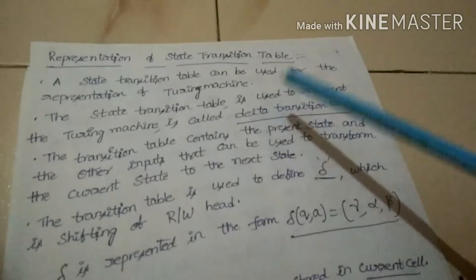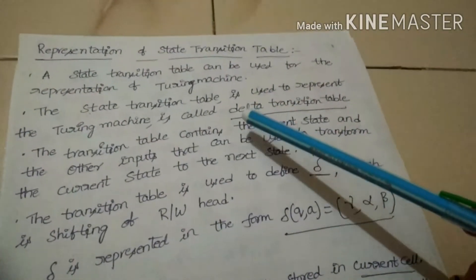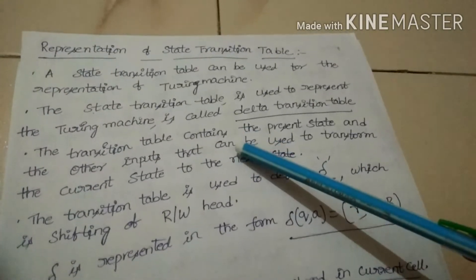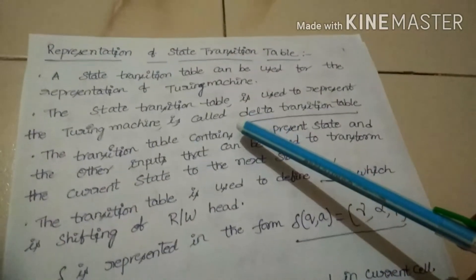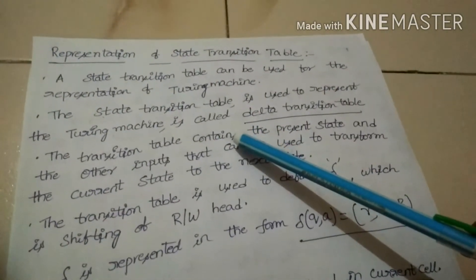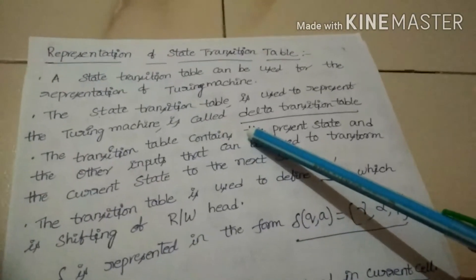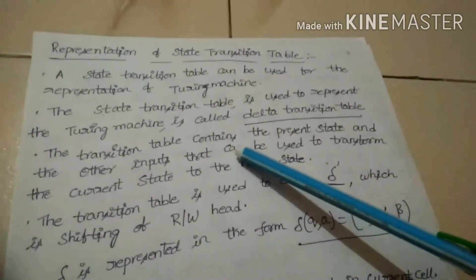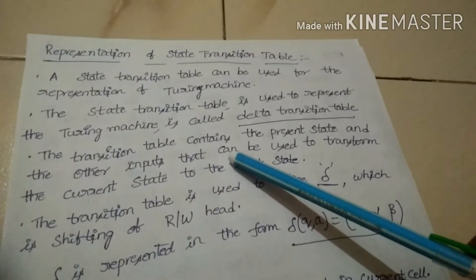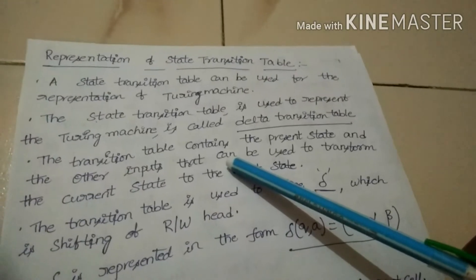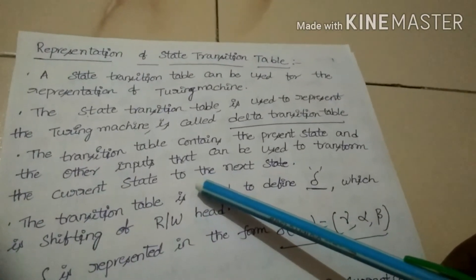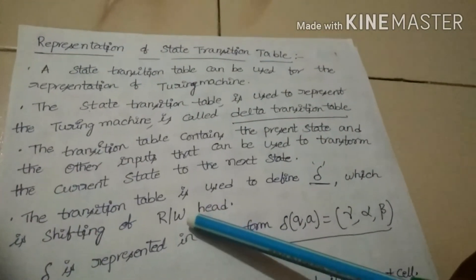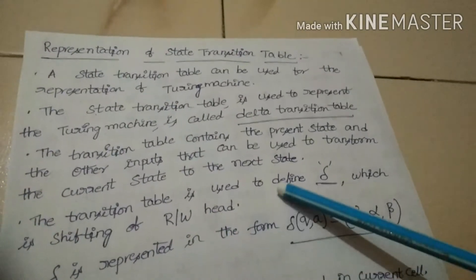The next topic is the representation of the state transition table. In the Turing machine representation, we have three ways. We have completed the first way — instantaneous description. The second is the state transition table, which can be used for the representation of the Turing machine. It is also called the delta transition table. This transition table contains the present state and other inputs, and it is used to transform the current state to the next state. The inputs in the case of a Turing machine are the tape symbols such as B, 0, 1. The transition table is used to define delta.